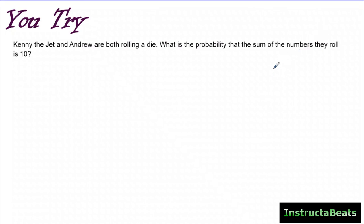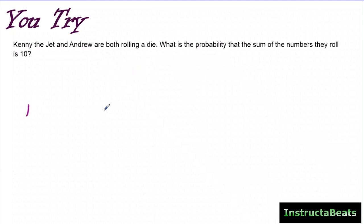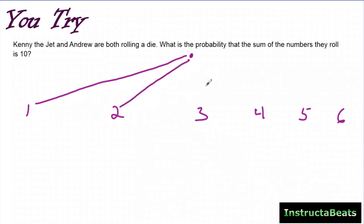So we have two dice being rolled — an independent compound event. When you roll a die, there are six different possible outcomes, so I'm going to make my tree map nice and wide. When Kenny rolls his die, it could be a one, two, three, four, five, or six. And then after that, you roll the second die, which can also be one, two, three, four, five, or six.